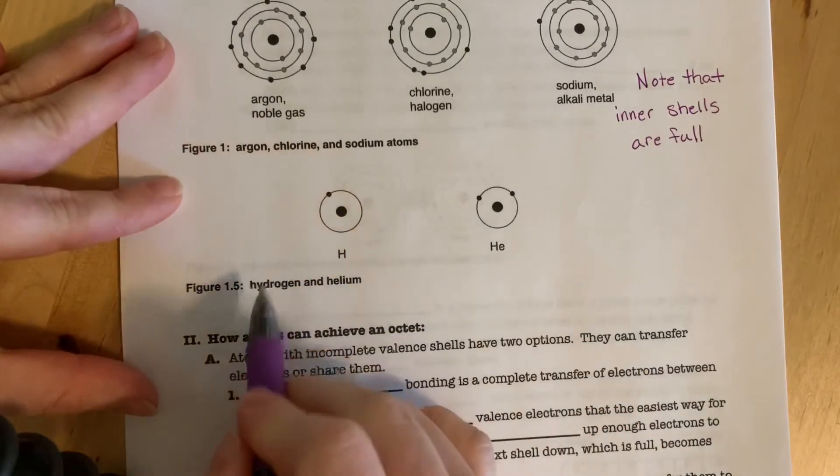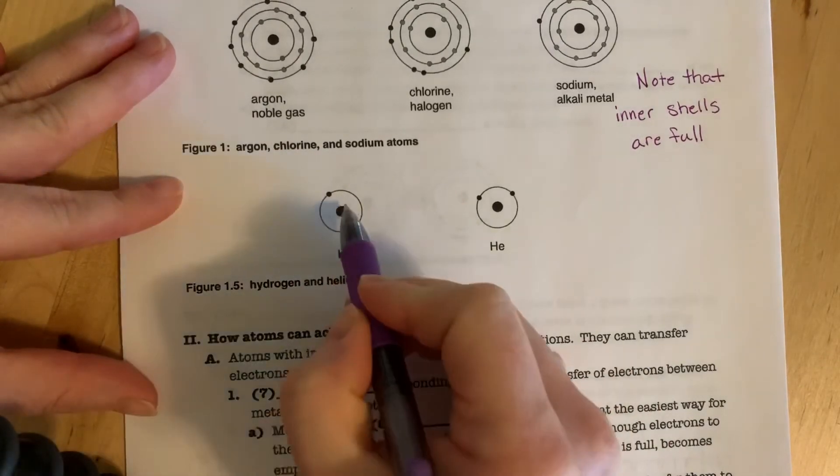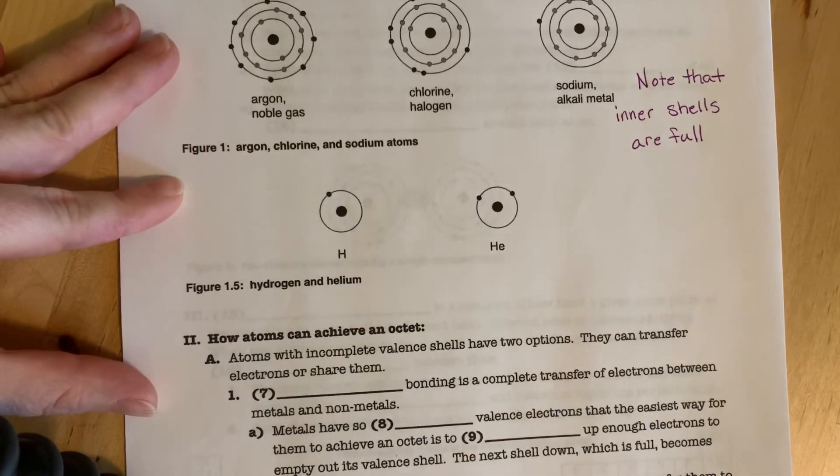Here's hydrogen and helium following their duet rule. That innermost shell is just too small to handle more than two electrons.